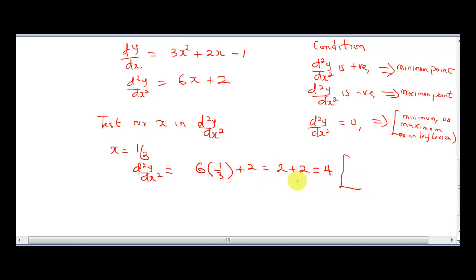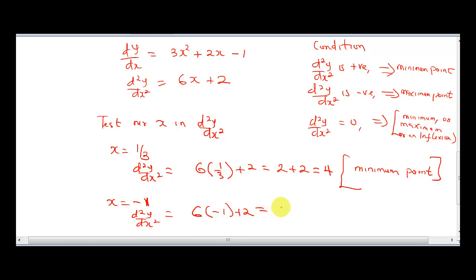Since d²y/dx² is positive 4, this is the minimum point. Then we test for x equal to minus 1. d²y/dx² is 6 into minus 1 plus 2, giving minus 6 plus 2, which gives us minus 4. So this is the maximum point. These are the natures of the curve at the different values of x: at x equal to 1/3, it's a minimum point where d²y/dx² is 4; and at x equal to minus 1, it gives us negative 4, showing the nature of the curve at that point is maximum.